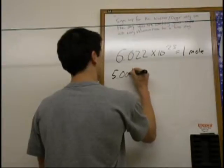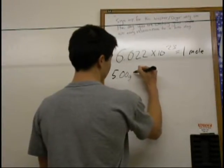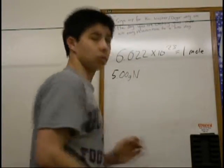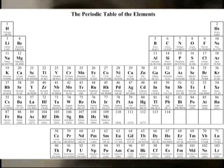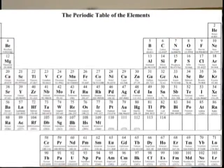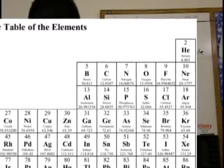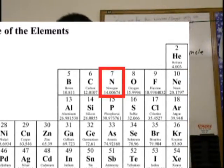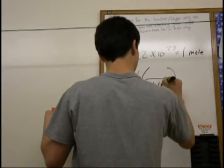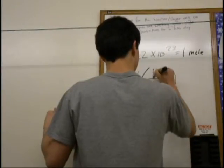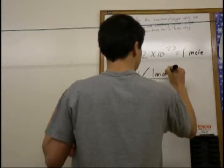if we had 5 grams of nitrogen, we would look that up on the periodic table. And that is 14.01 grams per mole.